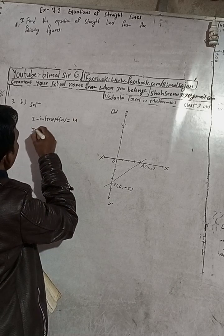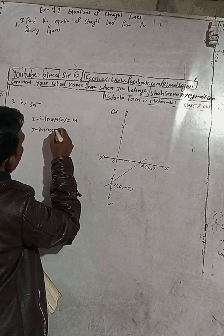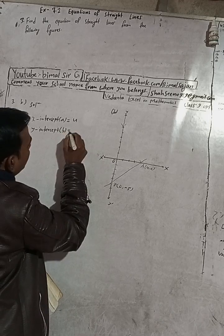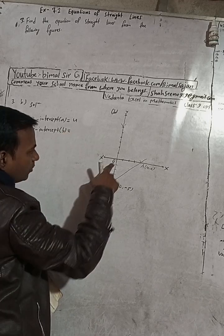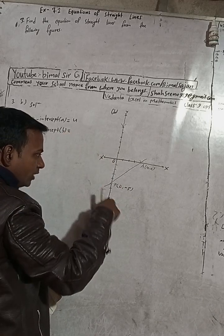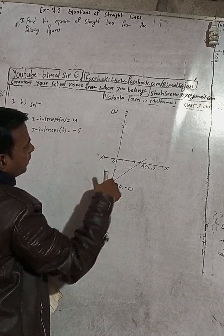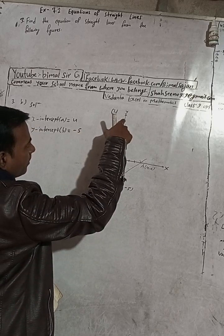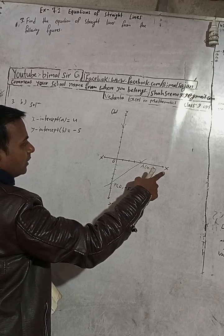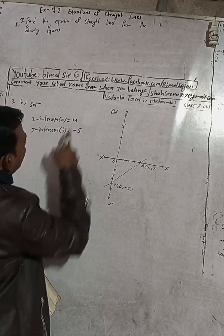The logic for signs: when the intercept is up, it is plus; down is minus. Right is plus, left is minus. So y-intercept b = -5 because it is downward. Now, therefore the equation of the line is x/a + y/b = 1.